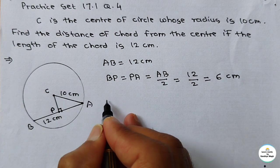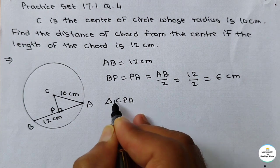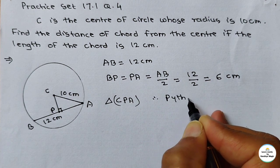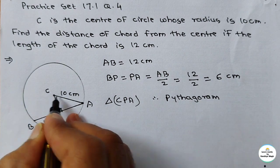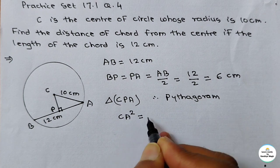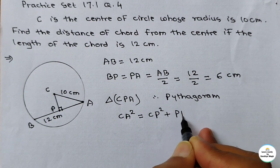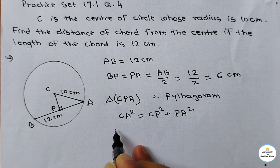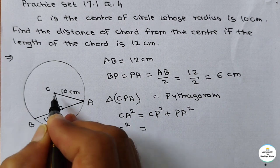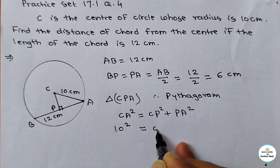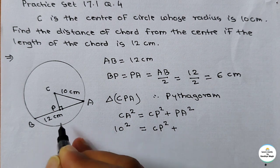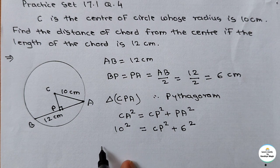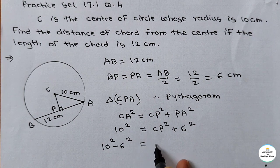Now just consider triangle CPA, where angle P is the right angle triangle. So we can use Pythagoras theorem. CA² = CP² + PA². We know the radius CA is 10 cm, so 10² equals CP² plus PA, which we just found is 6 cm, so 6². Now transfer 6² to the other side: 10² − 6² = CP².